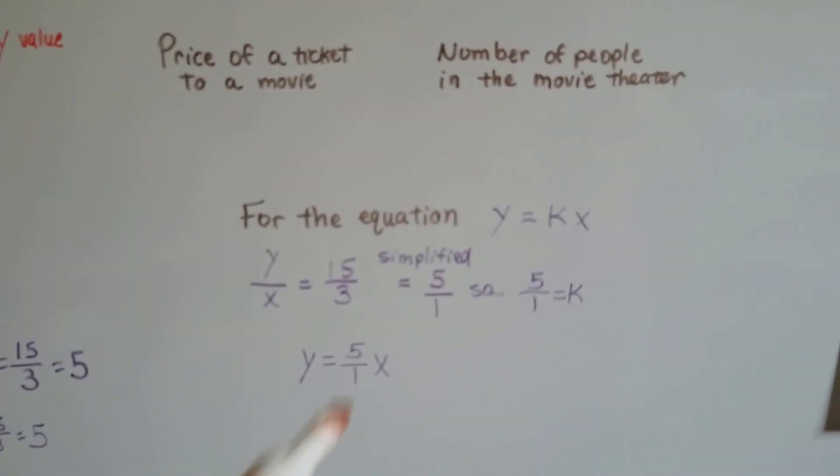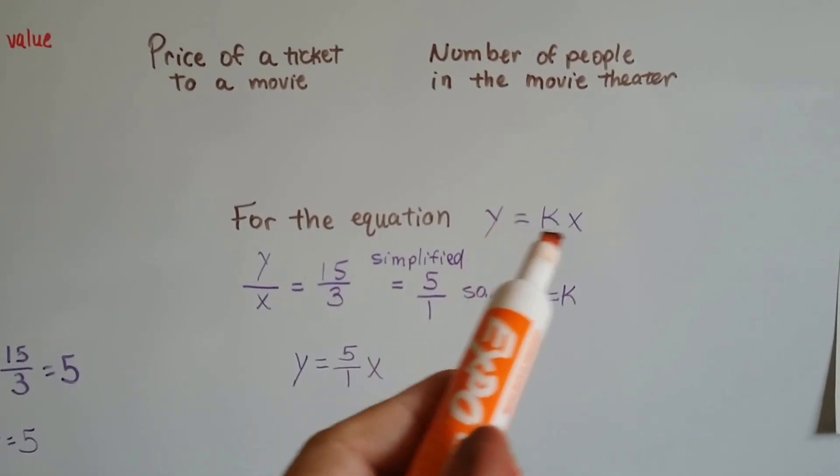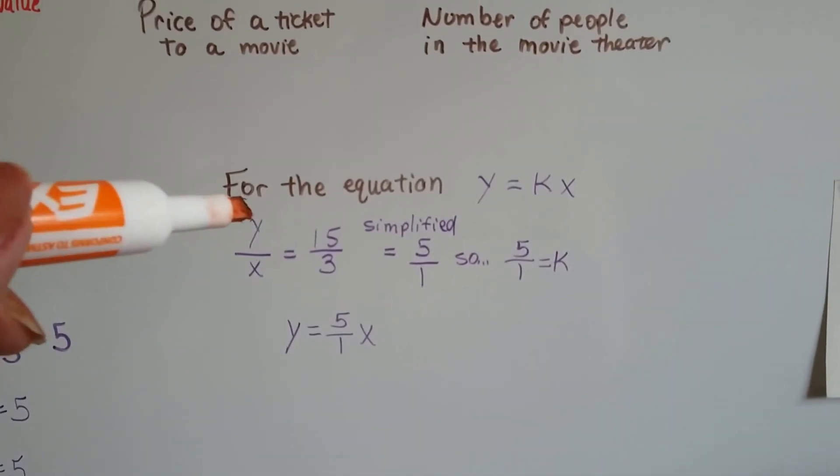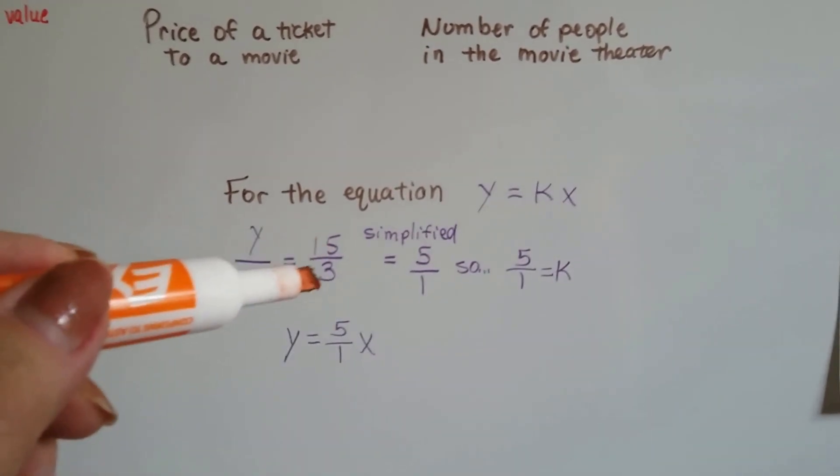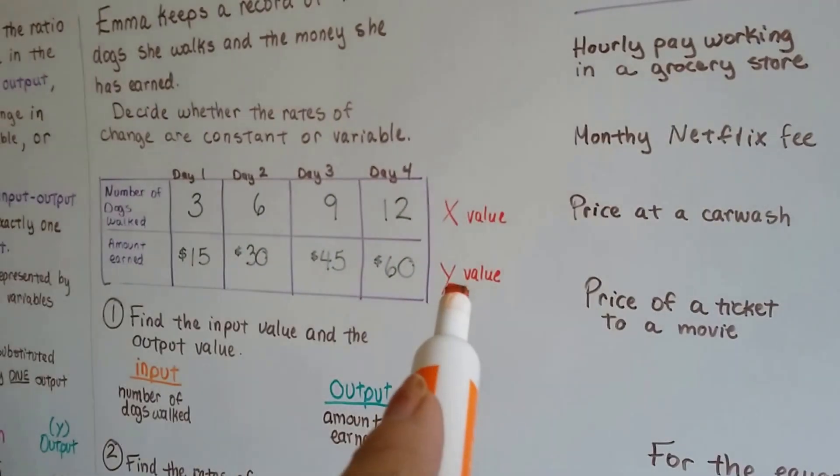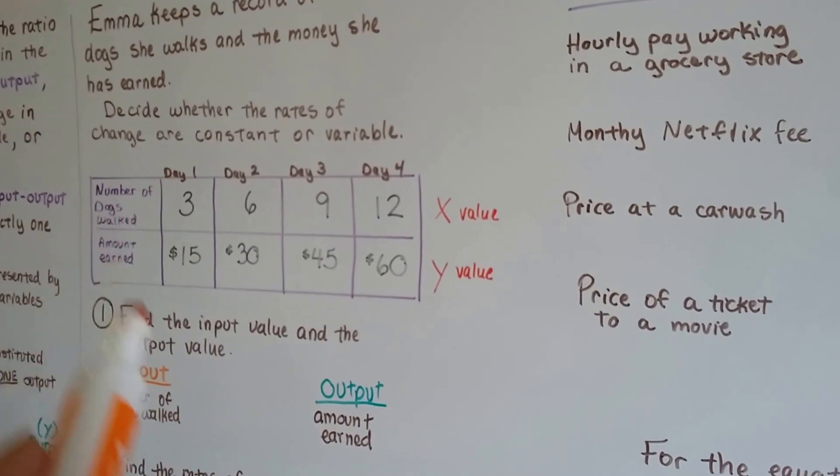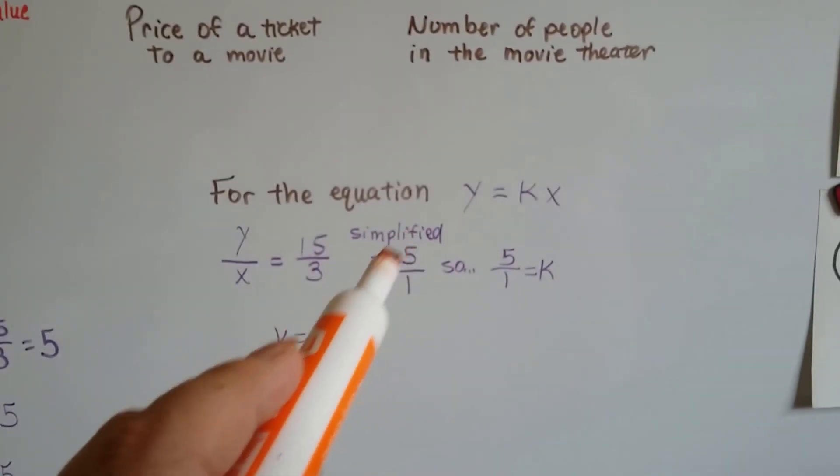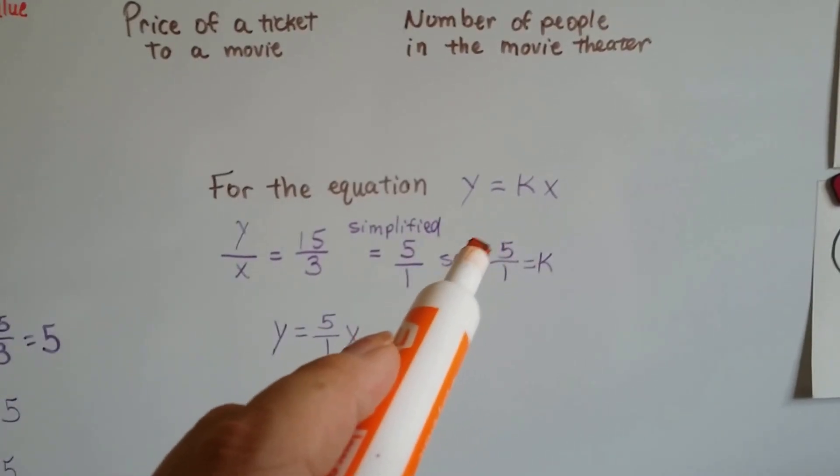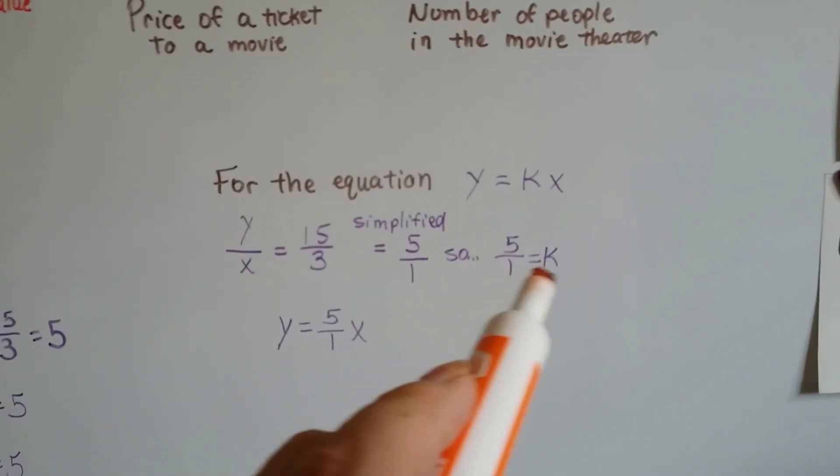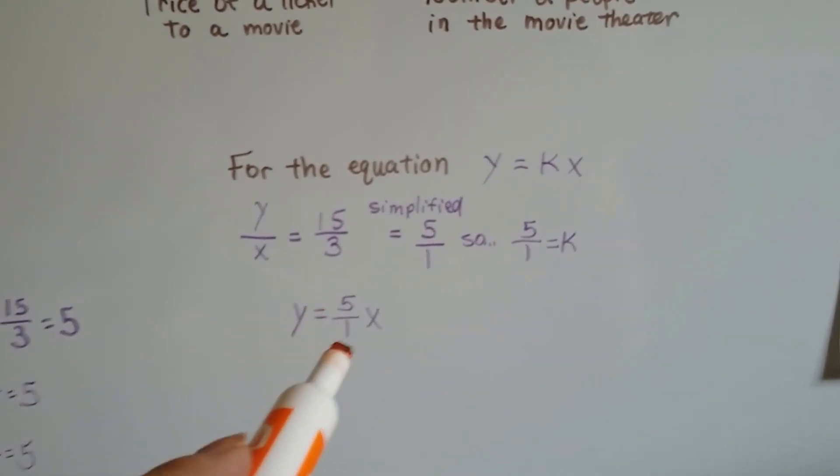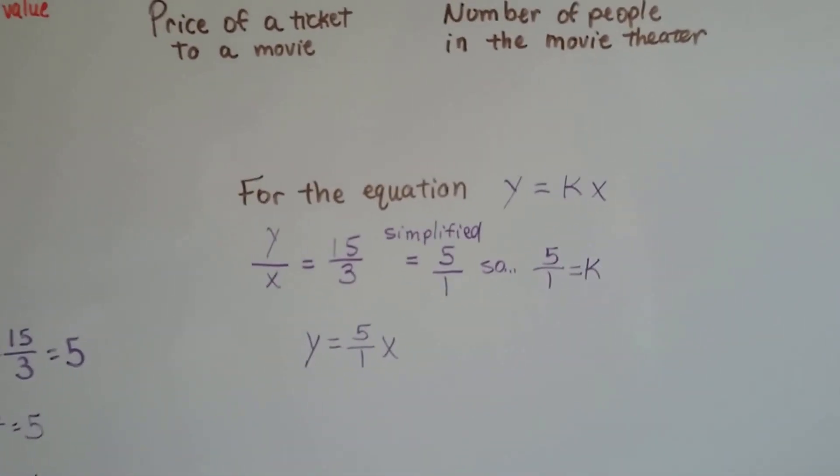Now, for the equation, our y equals kx, like we discussed in the last video, the y over the x is 15 over 3. Here's our y value. Here's our x value. It's 15 over 3. So we simplify it to 5 over 1, and that means our k is worth 5 over 1. Y equals 5 over 1 x. That would be our equation.